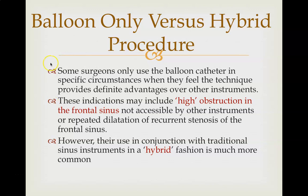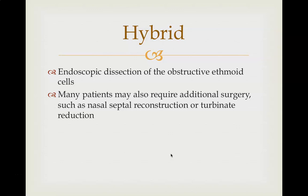Regarding balloon-only versus hybrid procedure: in most surgeries, a hybrid procedure is needed as the balloon alone is not enough. However, surgeons do use the balloon catheter in specific circumstances where it provides definite advantages over other instruments — for example, in high obstruction of the frontal sinus not accessible by other instruments. Their use in conjunction with traditional instruments in a hybrid fashion is much more common. For endoscopic dissection of obstructive ethmoidal cells, a hybrid procedure is required, and many patients will need additional surgeries such as septal reconstruction and turbinate reduction done after balloon sinuplasty.